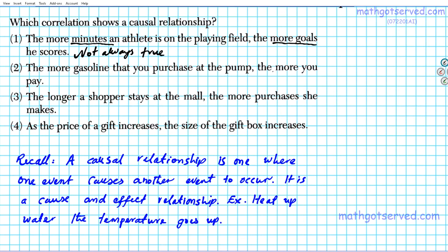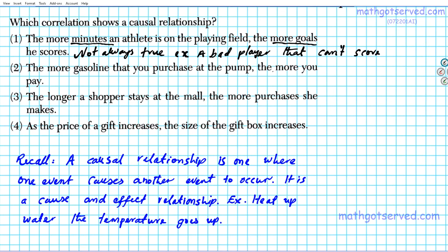How do we know it's not always true? What if we have a horrible player — so bad that the player can't even score? No matter how long you keep the person playing, it doesn't make any difference. So this is not a causal relationship. There are certain cases where the longer certain players play they score more goals, but it's not always the case. It depends on the skill level of the player and how good the opponent is.